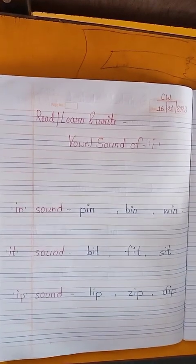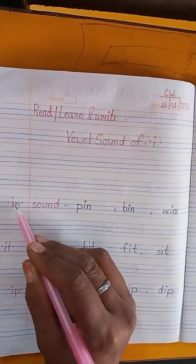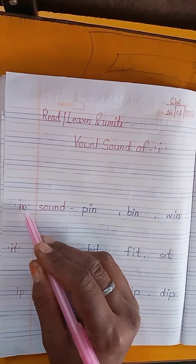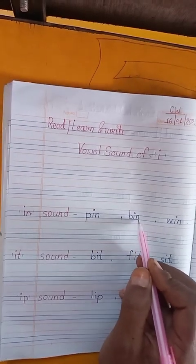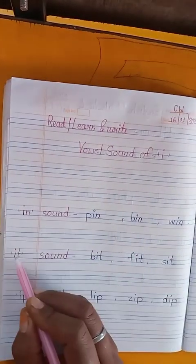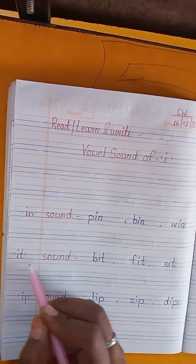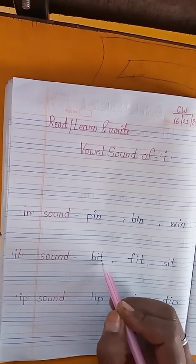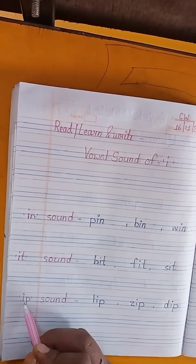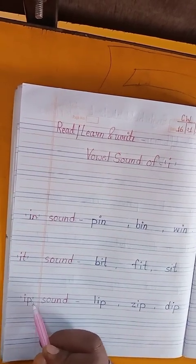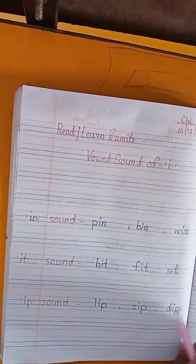Children, church read. I, I ka phonic sound E. And N, in sound. P-I-N pin, W-I-N win, I ka E-T ka T. Okay? It sound. B-I-T bit, F-I-T fit, S-I-T sit. I ka E-T-E, I-P-A-P, E-P sound, okay? L-I-P lip, Z-I-P zip, D-I-P dip.